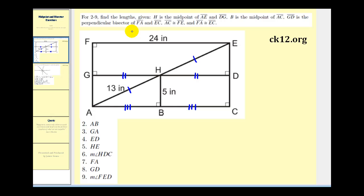GD is the perpendicular bisector of FA and EC. Here's GD and here's FA. So if it's a perpendicular bisector we know that segment FG has the same length as segment GA.